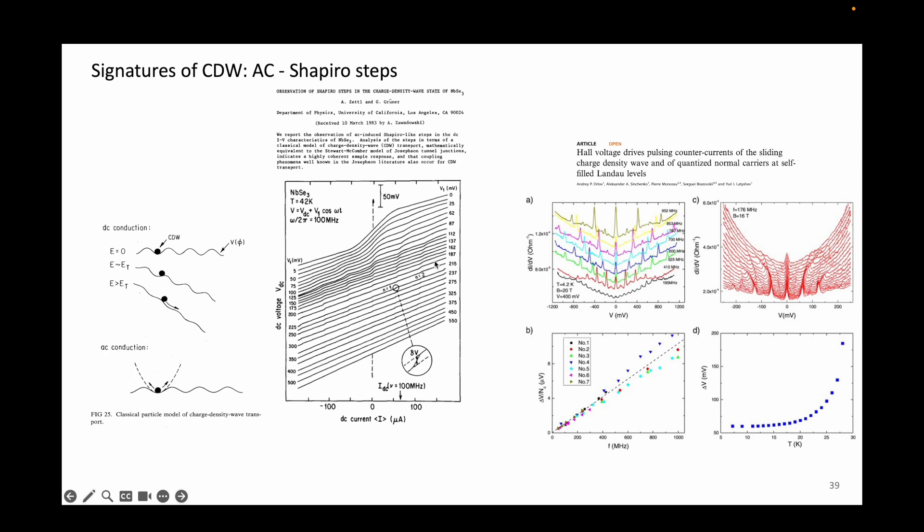These Shapiro steps in Josephson junctions are used in metrology because the voltage step sizes are proportional to the frequency of AC excitation. The AC excitation can be applied by combining AC plus DC in a frequency mixing configuration, or by applying an AC signal to an antenna near the sample inside the cryostat to irradiate the sample with microwaves.